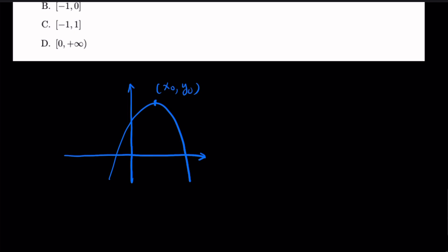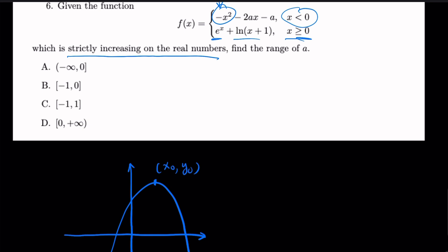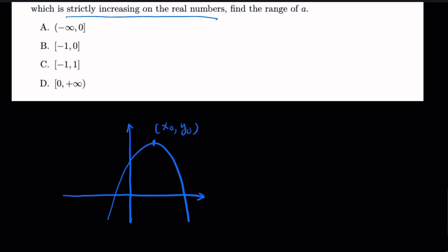And we know that for the function, it's going to be strictly increasing on the left-hand side. And then when it reaches this vertex, it starts to go decreasing.